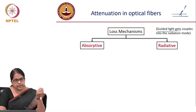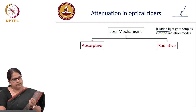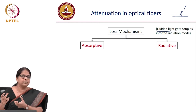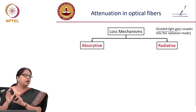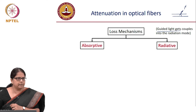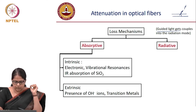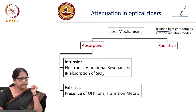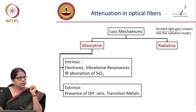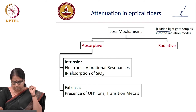In absorptive loss, energy is absorbed by the material and converted from photon to phonon — it is lost as vibration in the material and cannot be retrieved. The causes of absorptive loss are: first, intrinsic absorptive loss from electronic and vibrational resonances of the molecule, i.e., IR absorption of silica; and second, extrinsic loss arising from the fabrication process.